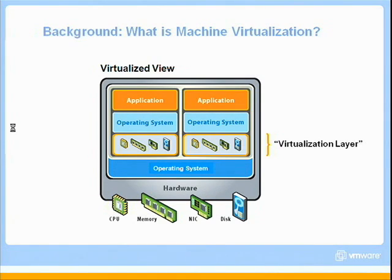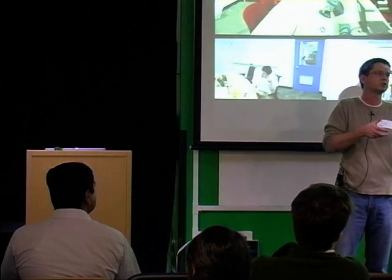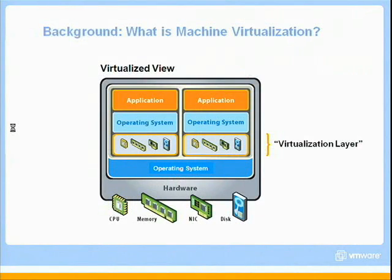The key here is that the virtualization layer is the boss of whatever is above it. It's in charge, and as a result it can observe everything going on above it and control what the guest does. That gives you nice characteristics — for example, the ability to migrate virtual machines from one physical machine to another without bringing it down. Similarly, what we're talking about is a record-replay mechanism that records what's going on inside a virtual machine and replays it in exactly the same way.